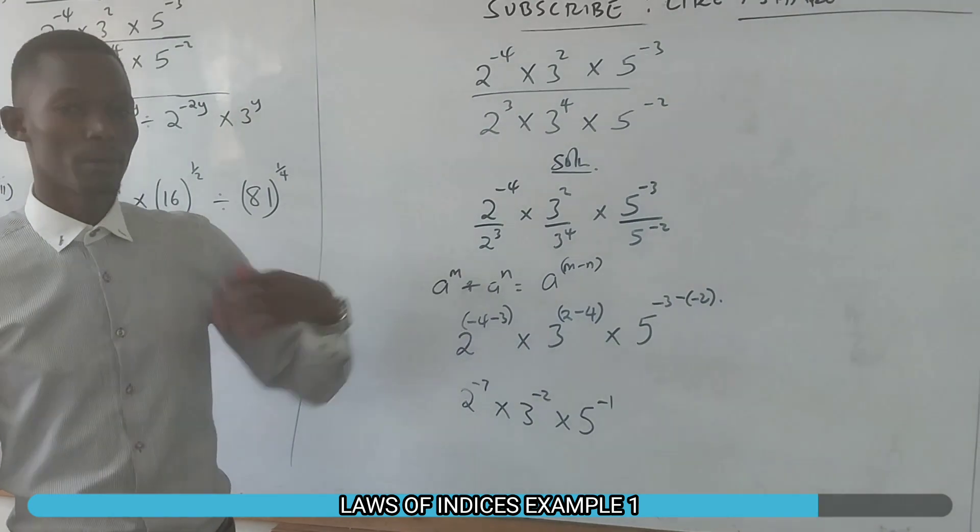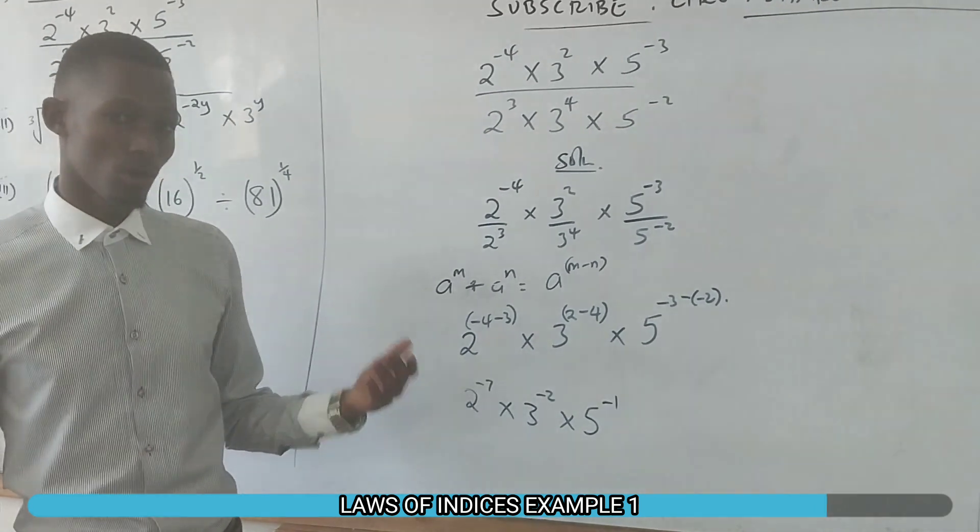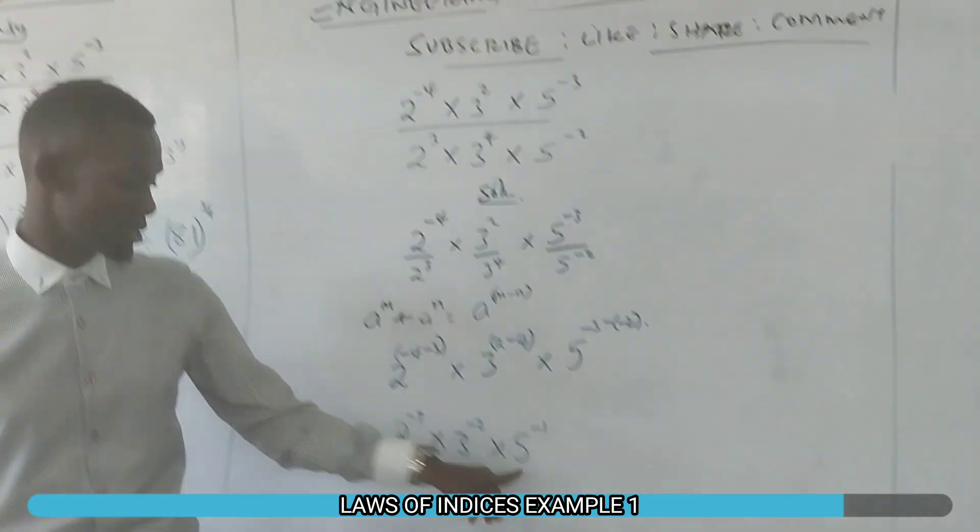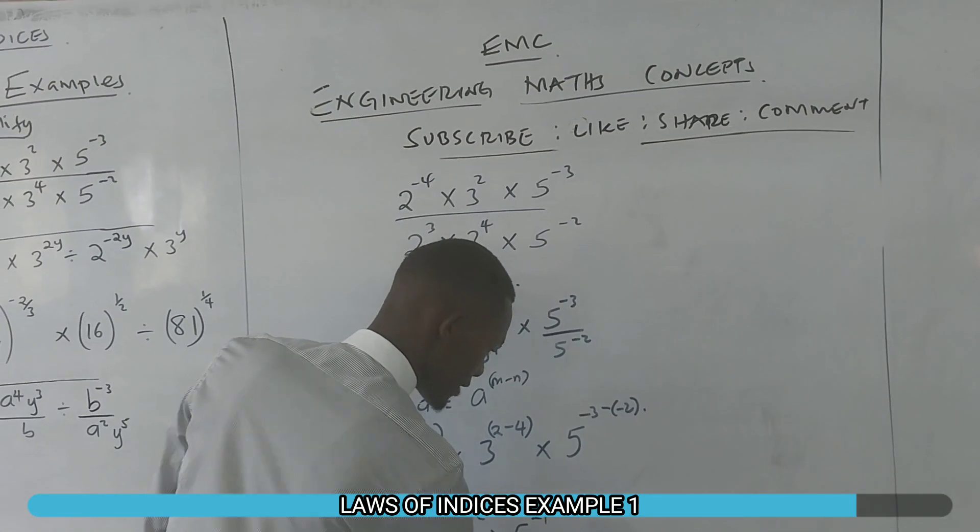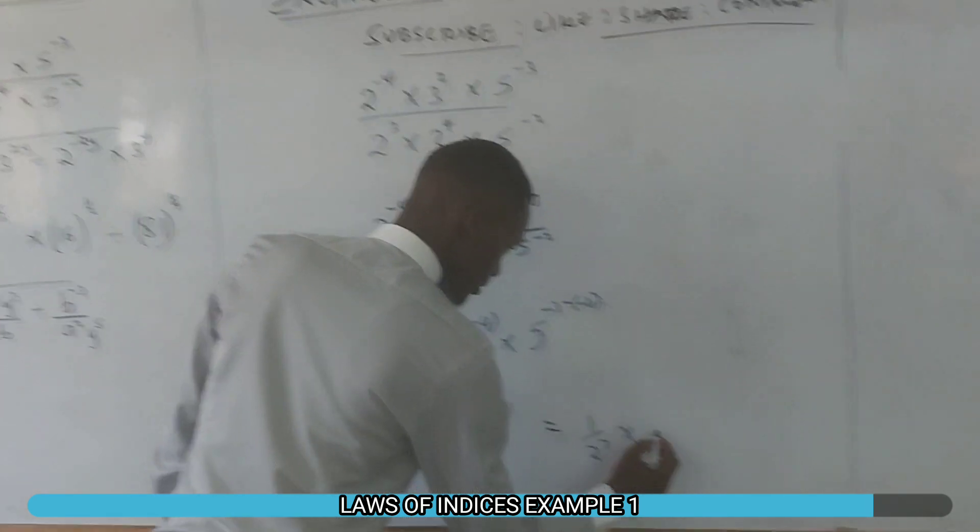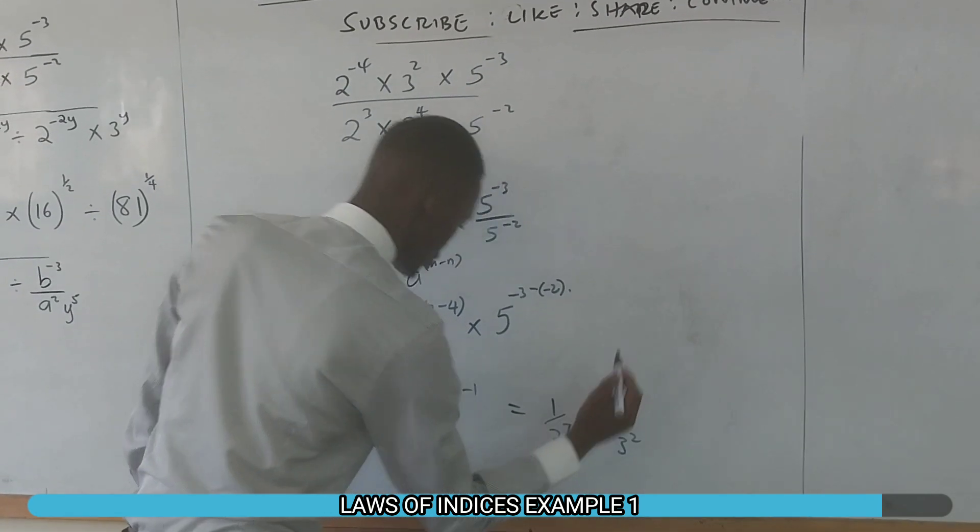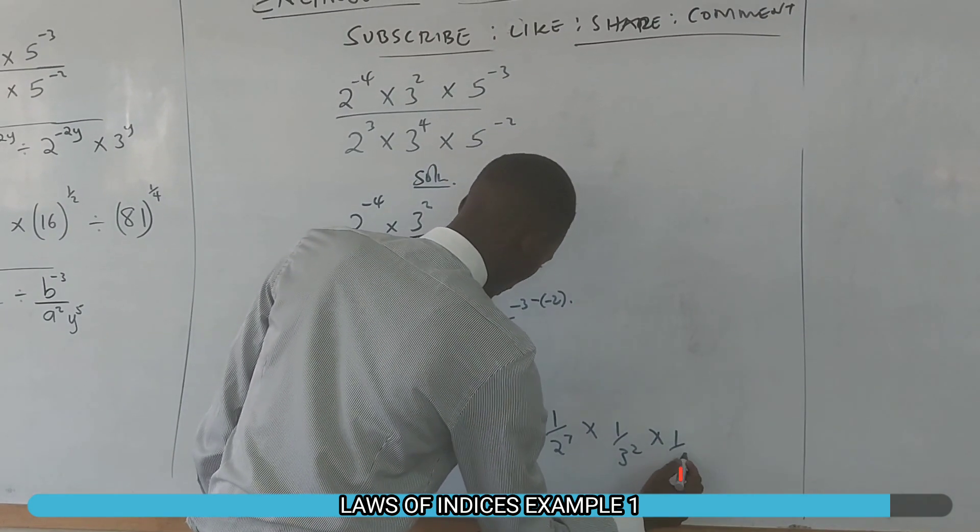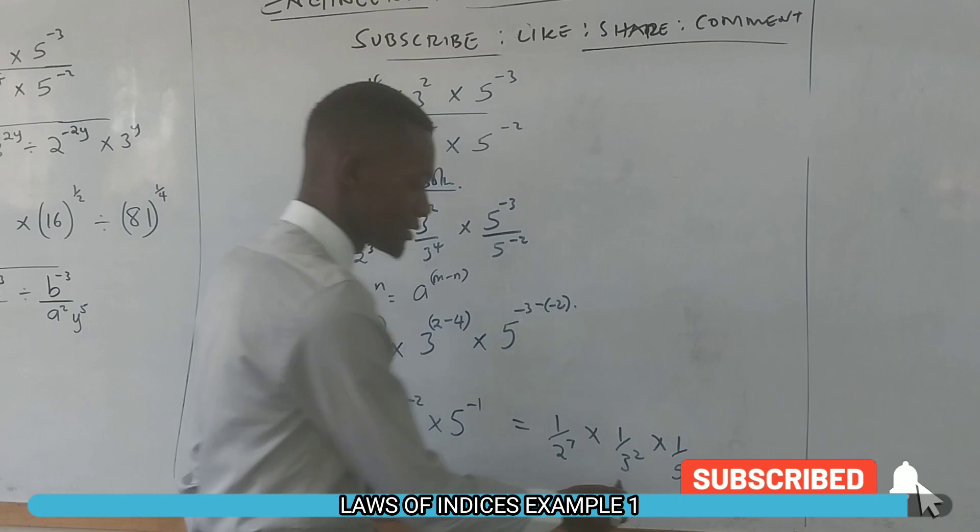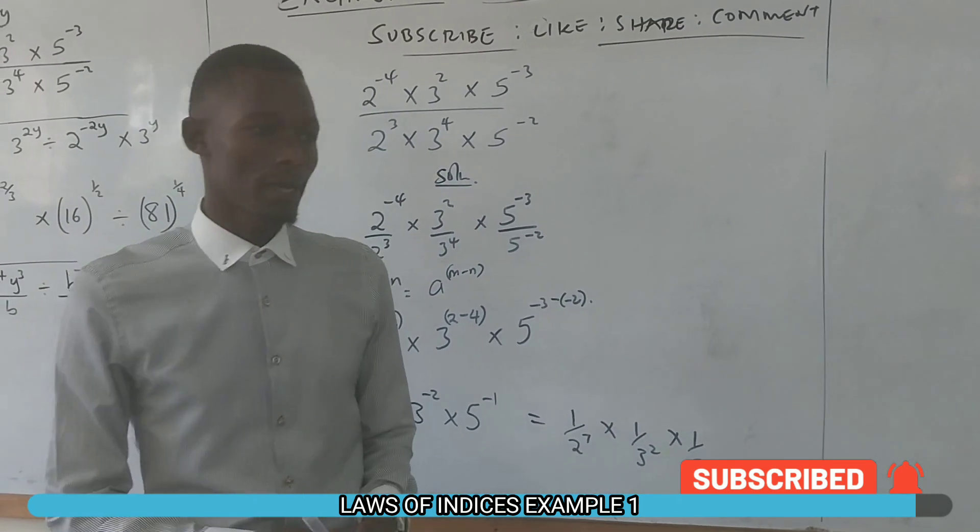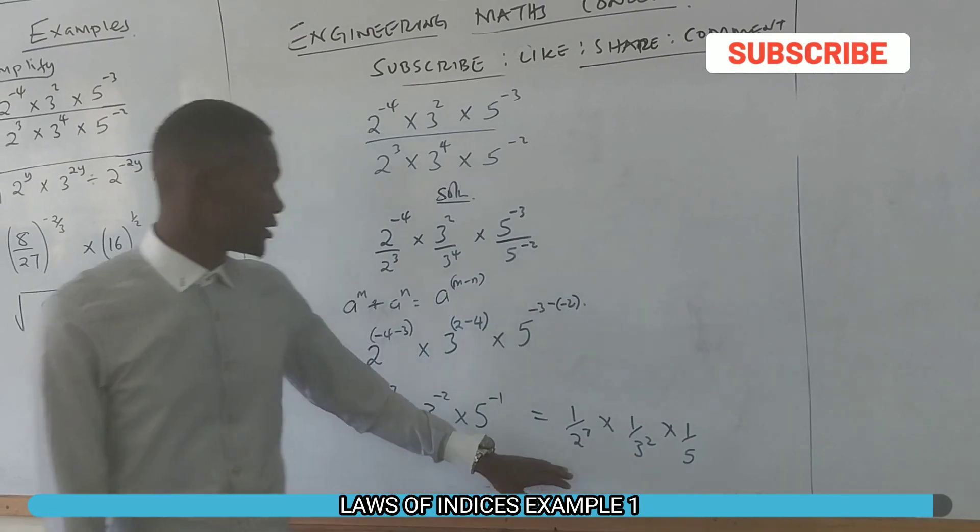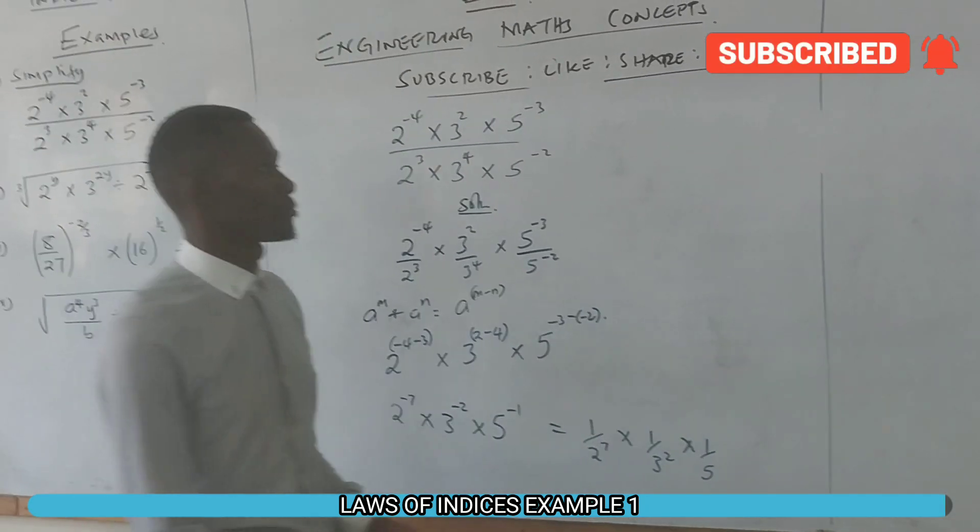The same applies to each term. So this simplifies to 1/(2^7) × 1/(3^2) × 1/(5^1), and a number to the power 1 is the same number. So you multiply these fractions together. That is the solution for the first example.